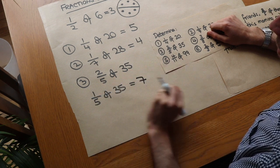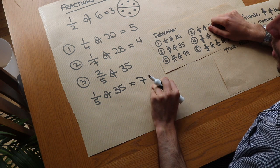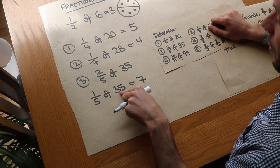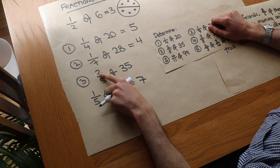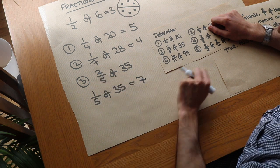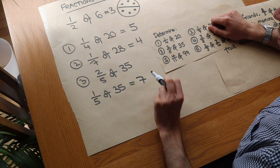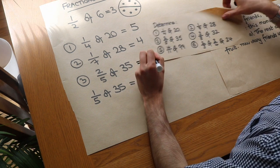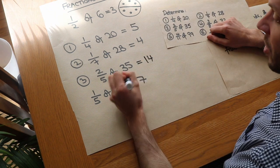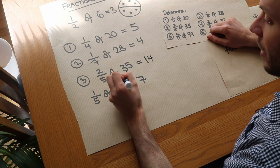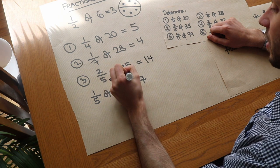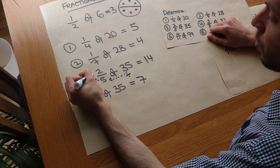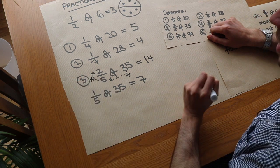So if one fifth of 35 is seven, what would two fifths be? Two fifths would be twice as much as one fifth, so twice as much as seven would be 14. Basically, we divide the 35 by the denominator, and then multiply by the top number.